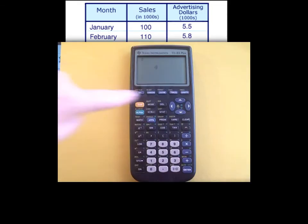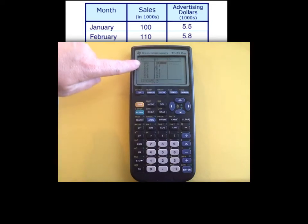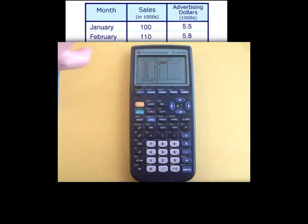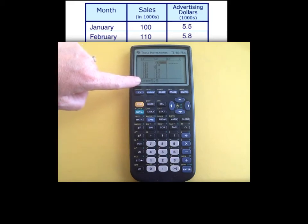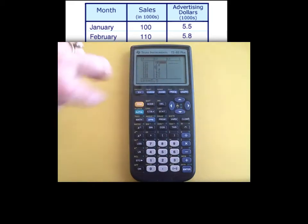I've already entered the data because I didn't want to waste your video time. And so you see that first column of sales is in my L1. The second column of advertising dollars is in L2. I do want you to know that by doing this in that order, I have indicated that the L1 is my X values. Those will be graphed on your X axis, your horizontal. And the second column are my Y. So what order you put them in, I'm choosing what my X and Y are.